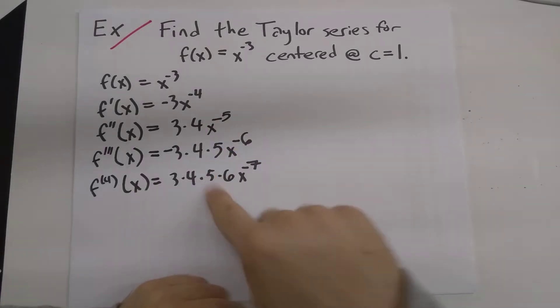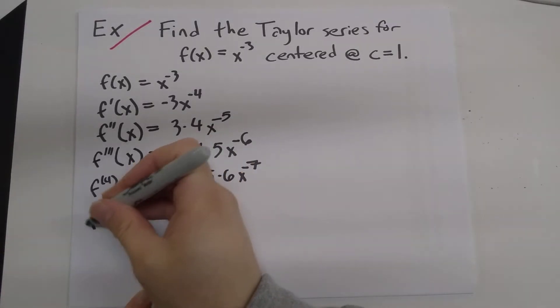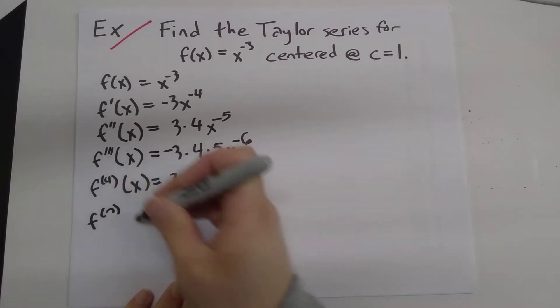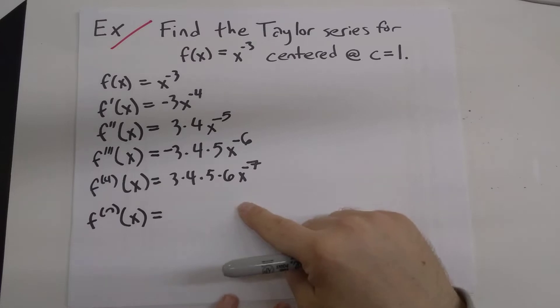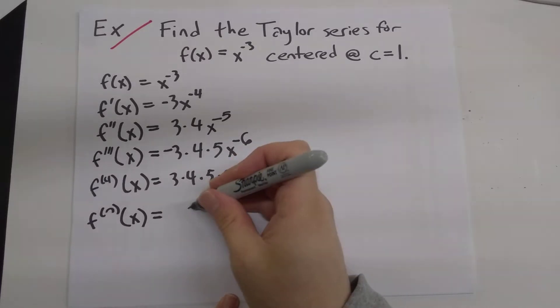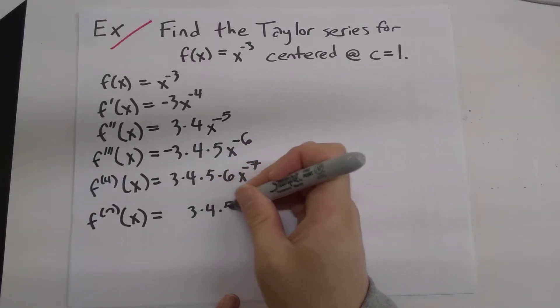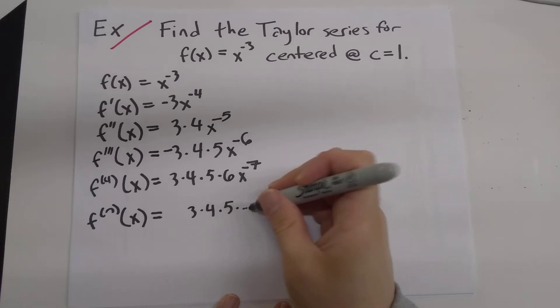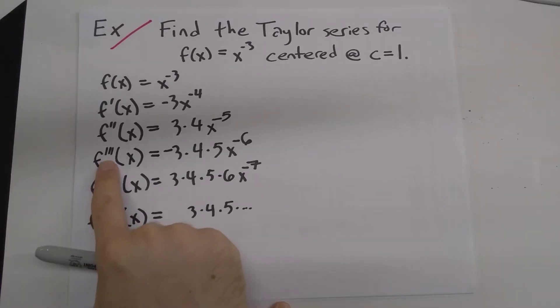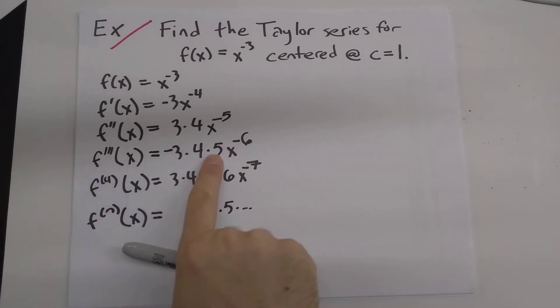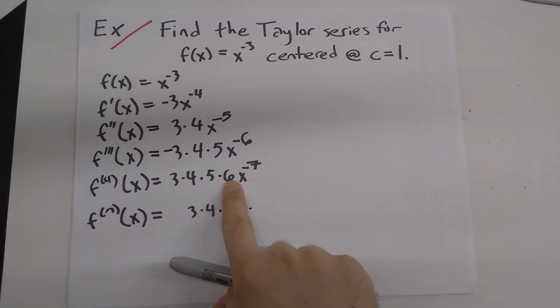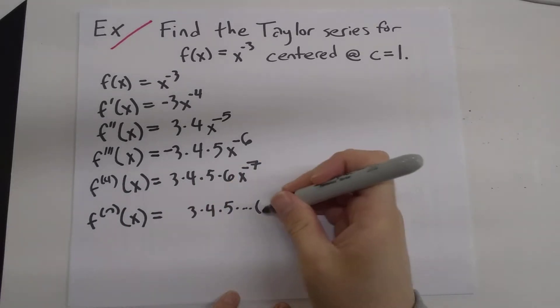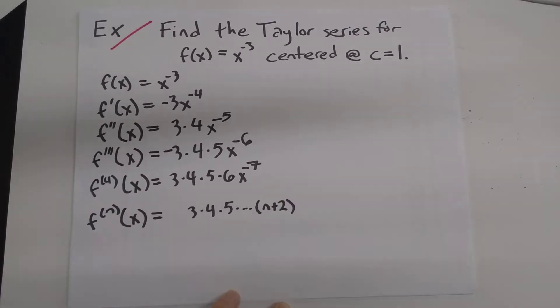And so in general, I think we have enough data here to say what's going on. The nth derivative of x is going to be 3 times 4 times 5 times dot dot dot, all the way out to, let's see, when we have the third derivative, we stop at 5. That's 2 bigger than 3. When we have the fourth derivative, we stop at 6. That's 2 bigger than 4. So it looks like we stop at n plus 2.